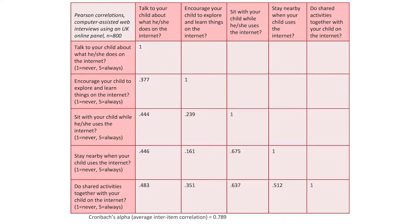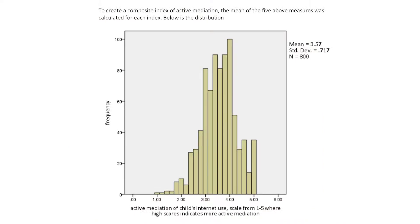Drawing on previous qualitative and survey research, we identified five questions to capture the idea of parents' active engagement with their children's internet use. Those were things like: Do you talk to your child about what he or she does on the internet? Do you encourage your child to explore and learn things on the internet? Do you sit with your child when they use the internet, stay nearby, and do shared activities together? We asked each question on a scale from zero to four, from always to never.